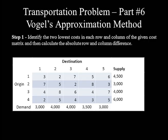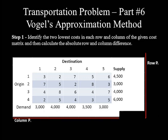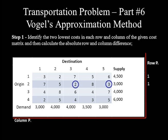Step 1: Identify the two least costs in each row and column of the given cost matrix, then calculate the absolute row and column difference — that is, the row penalty and column penalty as the difference between the two least costs of each row and column. We portray the row penalty at the right-hand margin and the column penalty at the bottom margin. The least cost in row 1 is 2 and the second least cost is 3, so 3 minus 2 equals 1. In row 2, the least cost is 2 and the second least cost is 3, so their difference is also 1. In row 3, the least and second least costs are both 4, so 4 minus 4 equals 0.